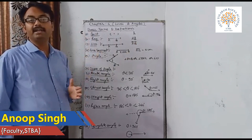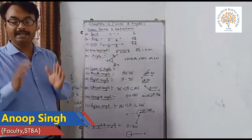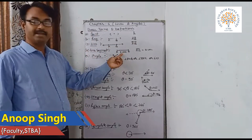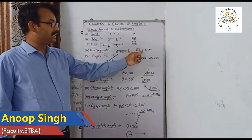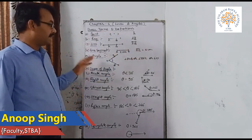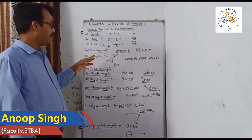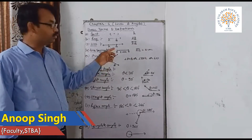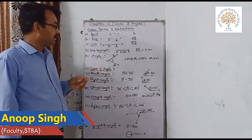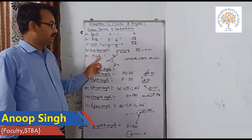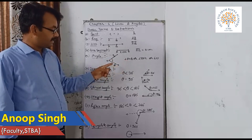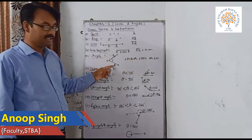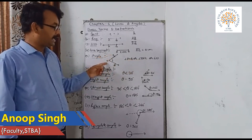A line segment is a part of a line which has a finite distance. For example, line segment AB equals 5 centimeters, denoted as AB bar equals 5 cm. An angle has a common endpoint with two rays going in different directions. This is called an angle, like angle AOB, or angle BOC, or simply angle O.